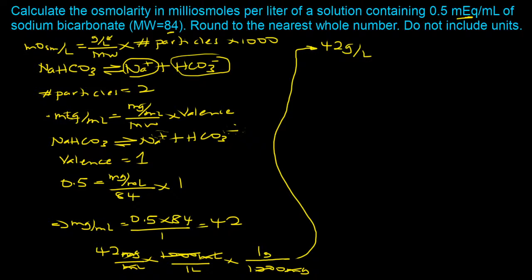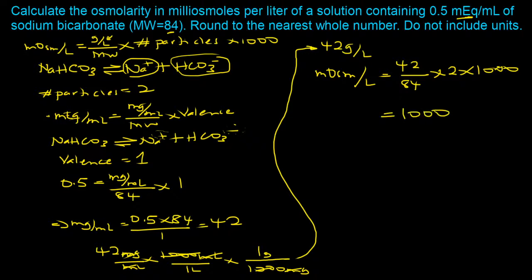Putting all values into the osmolarity equation: milliosmoles per liter equals 42 divided by 84, times 2, times 1000, which gives 1000. On an exam like NAPLEX, pay attention to the conditions: the question says round to the nearest whole number — done — and do not include units. So the answer to enter is 1000.